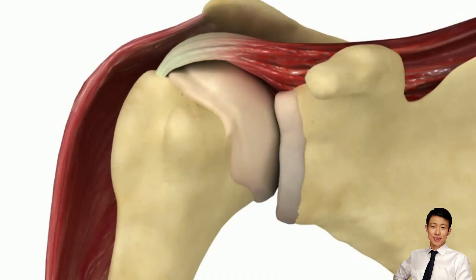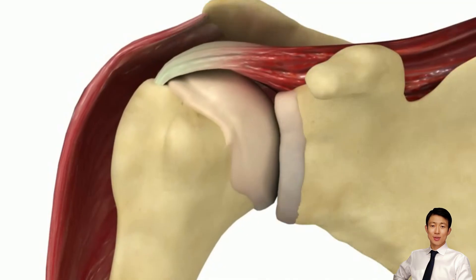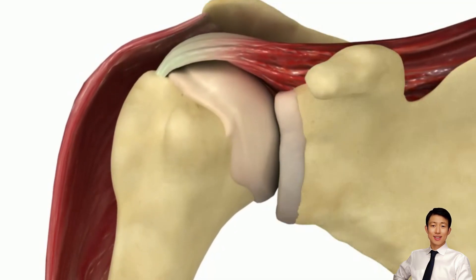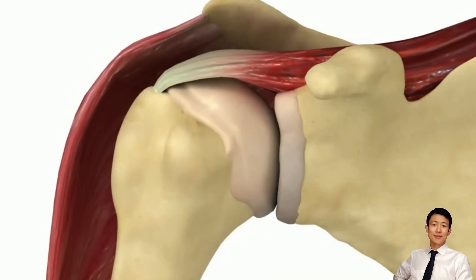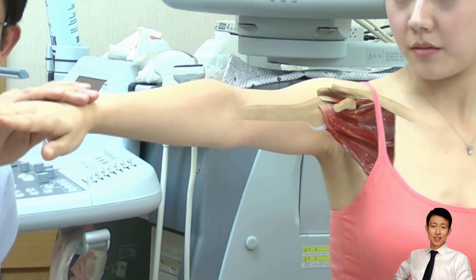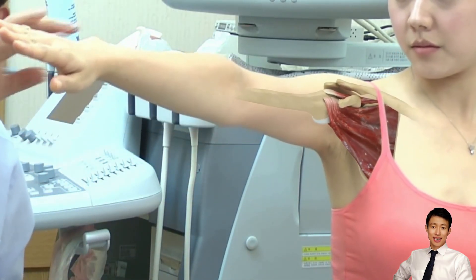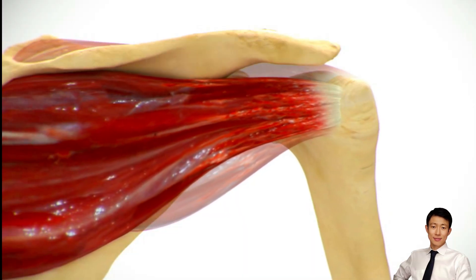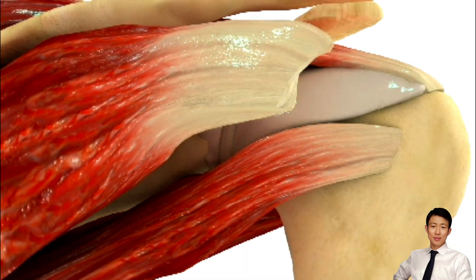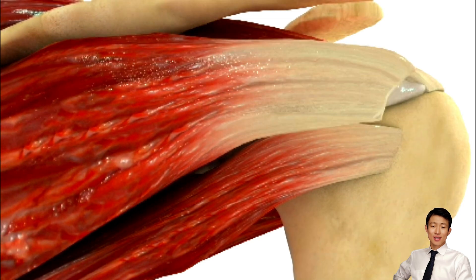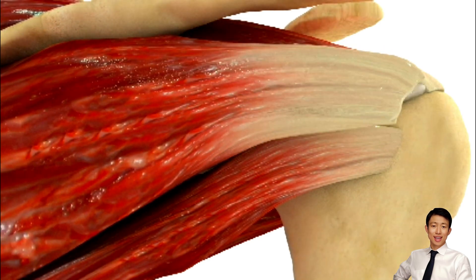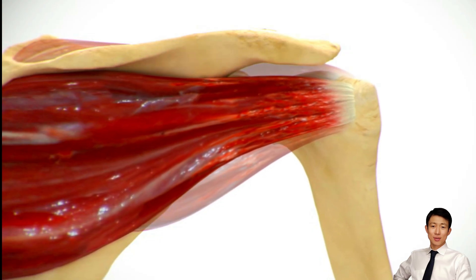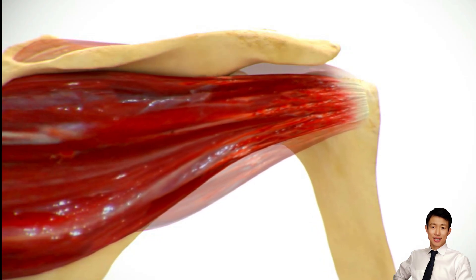The supraspinatus originates from the supraspinous fossa and inserts on the superior facet of the greater tuberosity. It is crucial for initiating abduction and maintaining glenohumeral congruency. The infraspinatus arises from the infraspinous fossa, inserting into the middle facet of the greater tuberosity. It is the primary external rotator and posterior stabilizer.